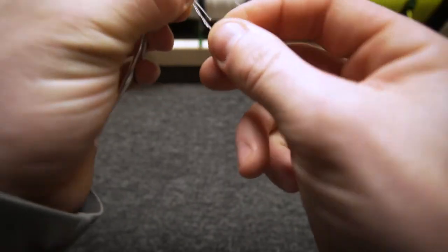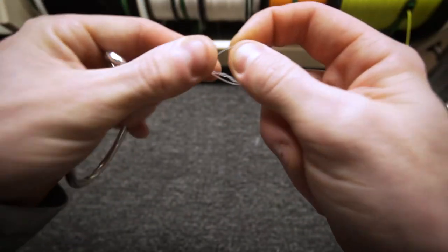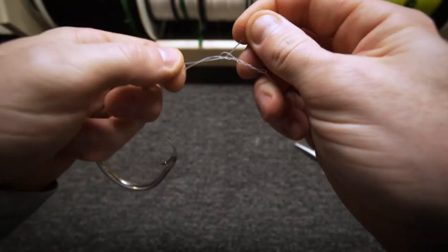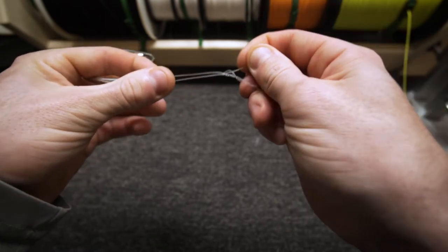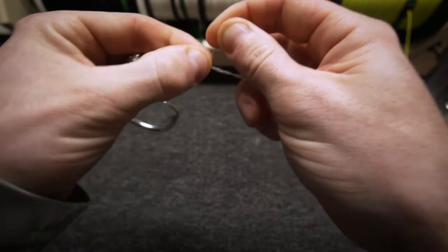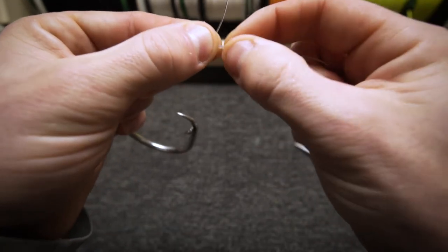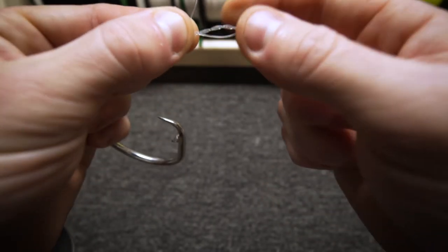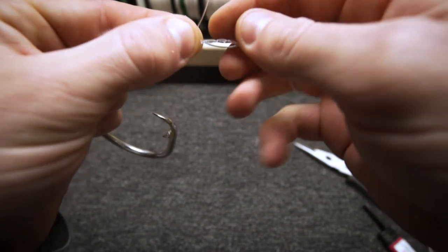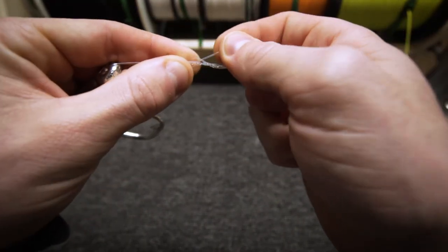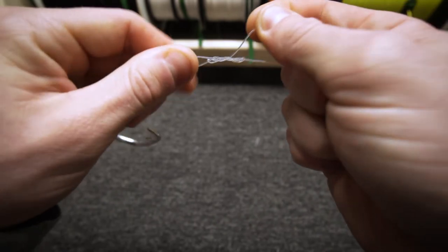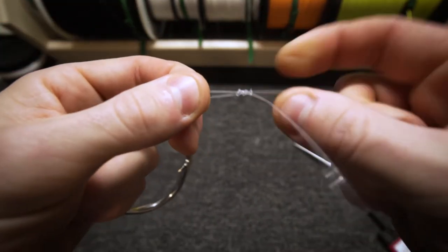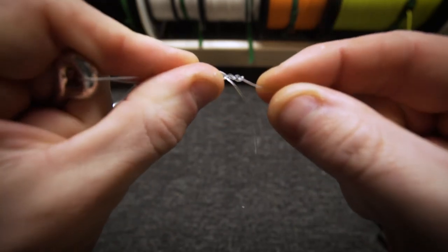Through the eye and then back through the main loop. Now mono is more difficult than braid to tie. With this I would pull this tag so you can see these are kind of like braided twists, they're not really barrels yet. You'll know once you try it, but they're like braided twists and I want to get them to barrels. So what I do is I then pull my tag end and it starts to bunch them on top of each other.